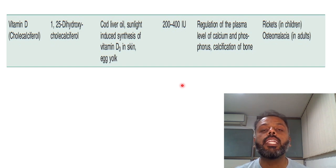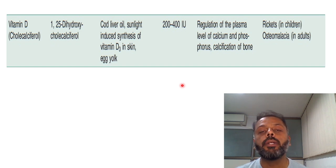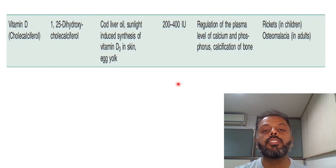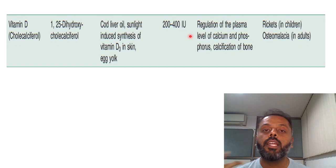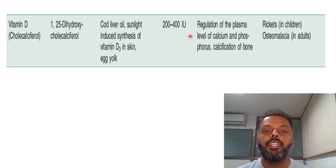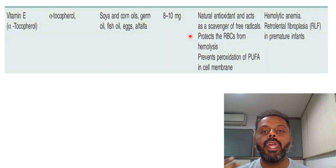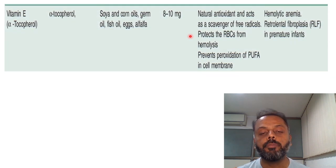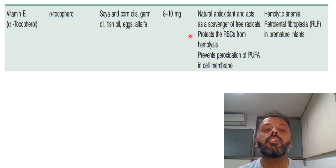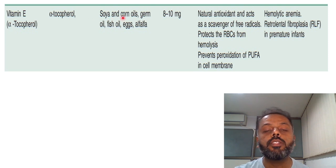The daily requirement of vitamin D is 200 to 400 international units. Now, the third important fat-soluble vitamin is vitamin E. The active form of vitamin E is alpha-tocopherol. The sources of vitamin E include germ oil, fish liver oil, soya, and corn oils.